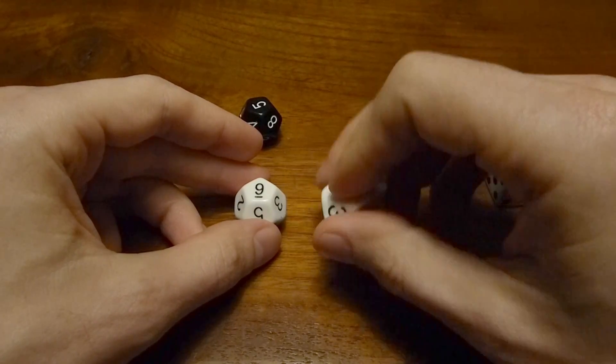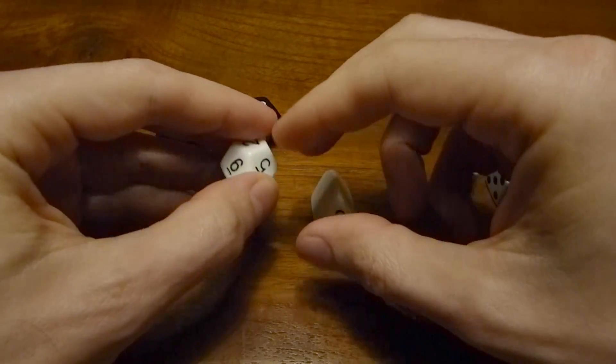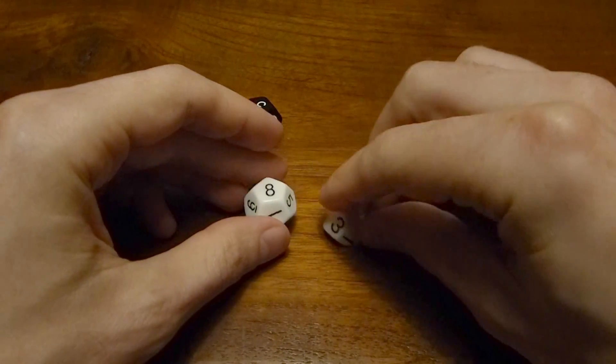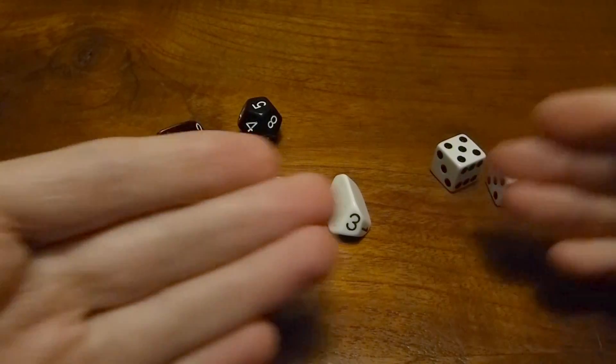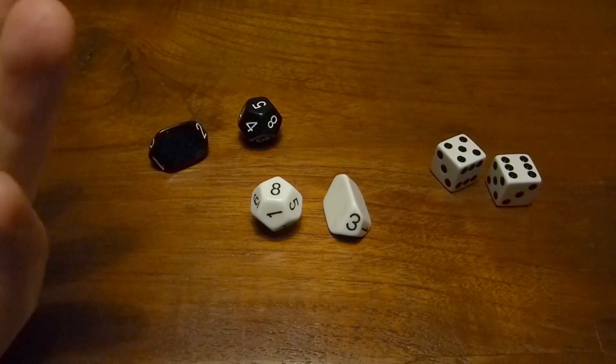And on this one, I can either do 9 and 2 to get 11, or I can do 8 and 3. So again, there's two ways to get 11 on this, and two ways to get 11 on this, and you can check all of the possibilities, and there's exactly the same number.